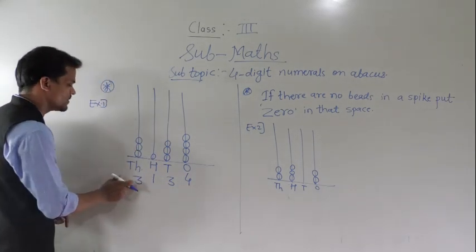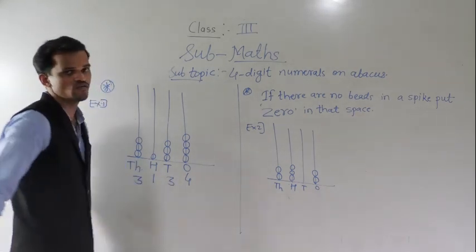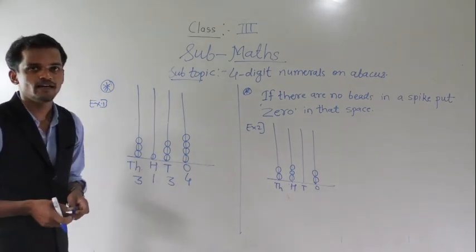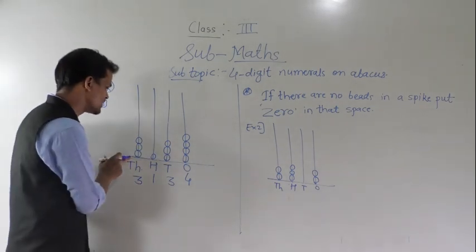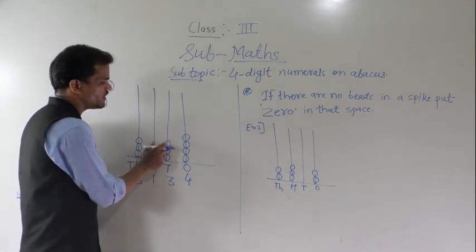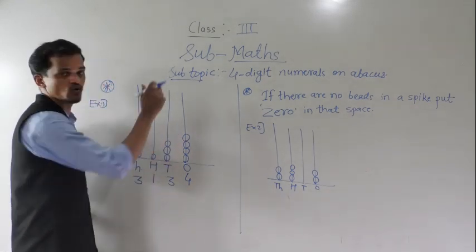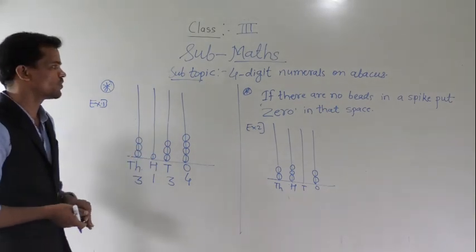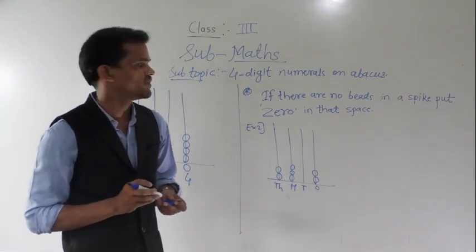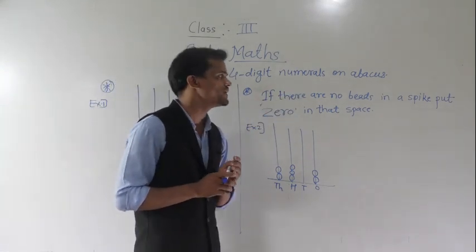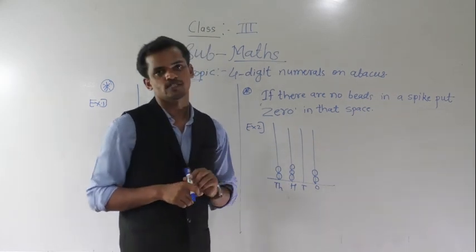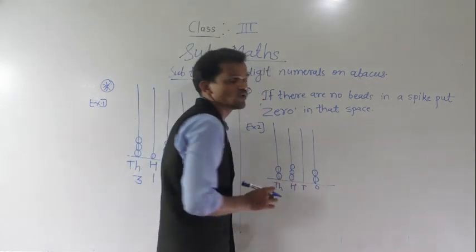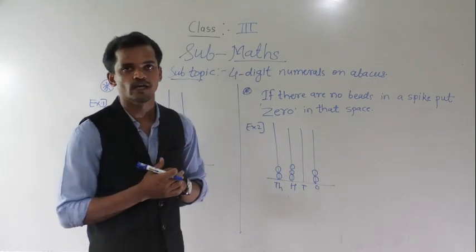Now we can read this number: three thousand, one hundred, thirty-four. One important thing to remember: if there are no beads in a spike, put zero in that place.